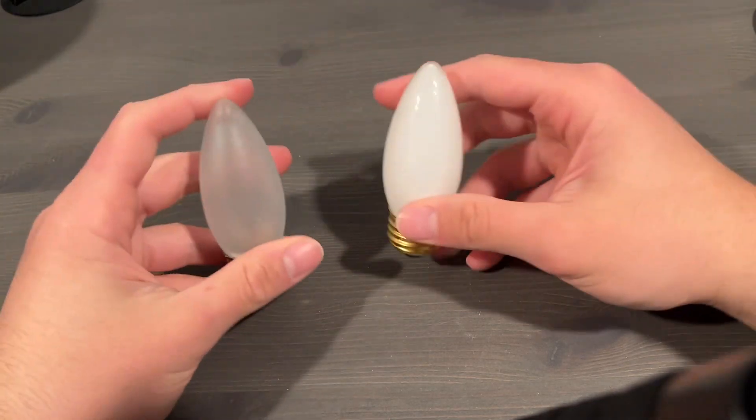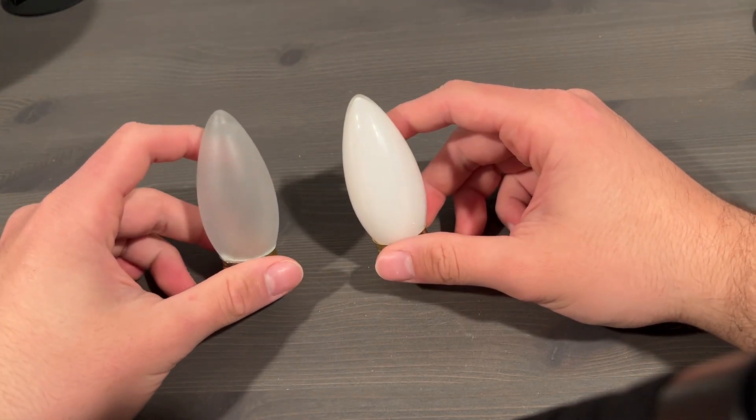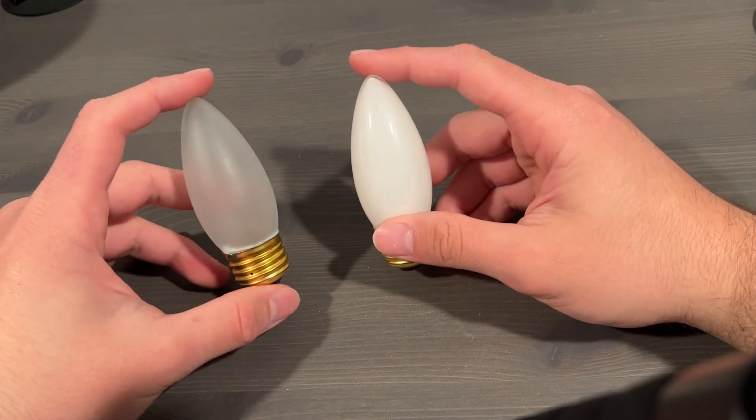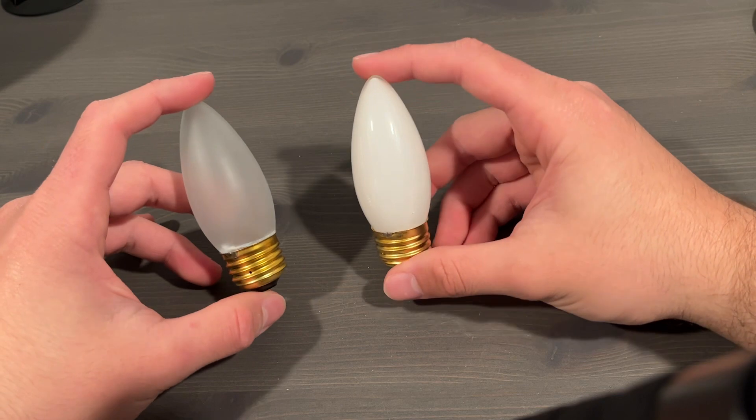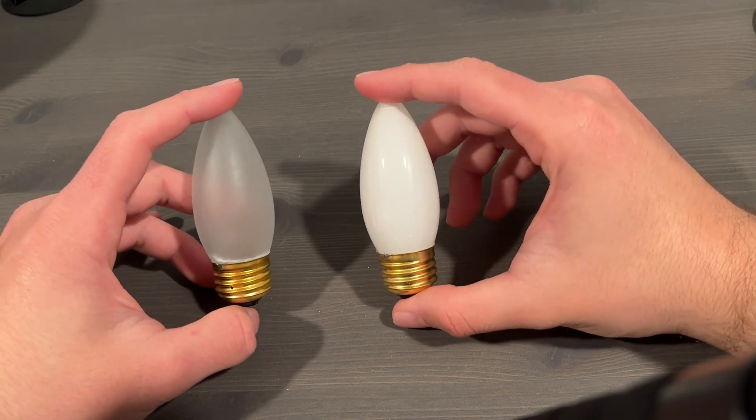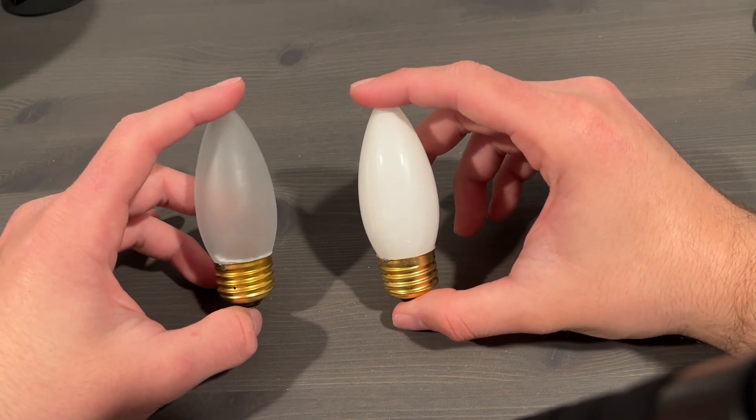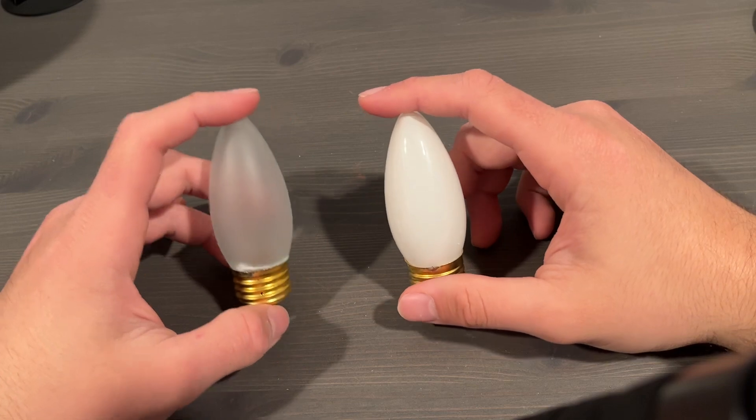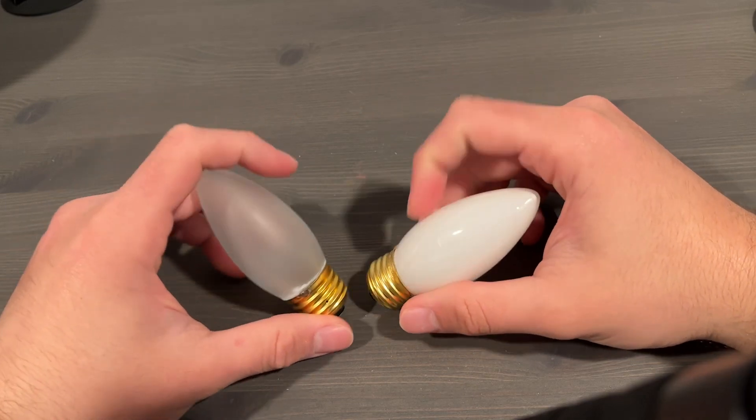All right, so here are the two bulbs side by side. Now, as you can see, the frosted version, which is on the left, has a much darker coating. It's more of a gray rather than a white. Obviously, the white is white. You can see much better out of the package, so I'm glad I took them out.